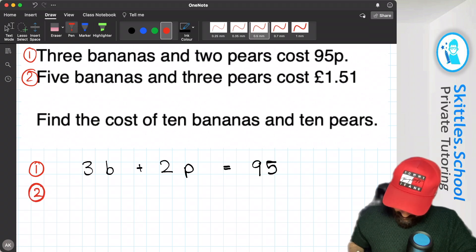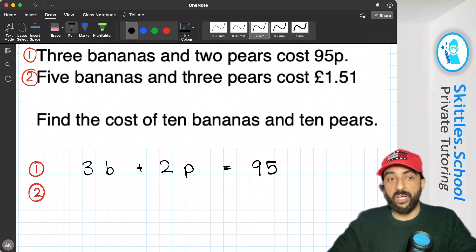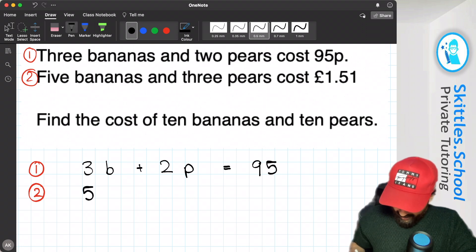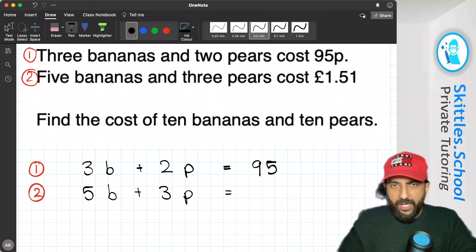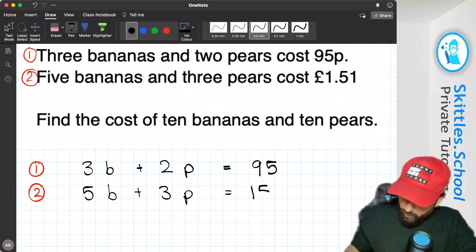Equation 2. 5 bananas and 3 pears cost £1.51, so 5 bananas and 3 pears, and the £1.51 I'm going to change to 151 pence.